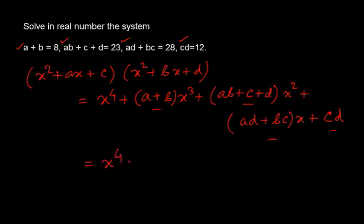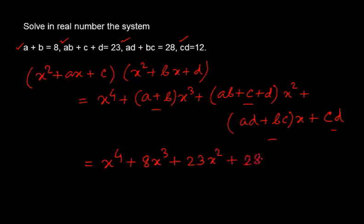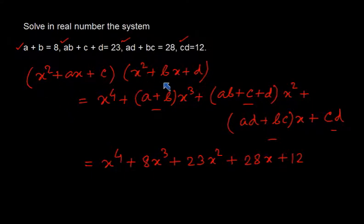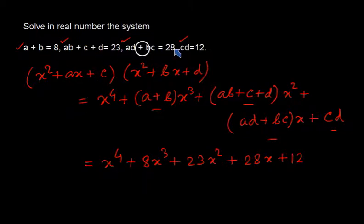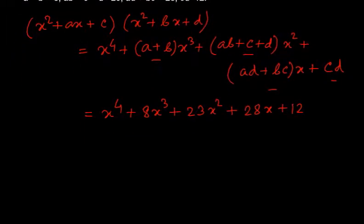So we are getting a biquadratic polynomial. By substituting the given values, that is X⁴ plus 8X³ plus 23X² plus 28X plus 12. This is the biquadratic polynomial we are getting. Now to solve for A, B, C, D, what we need to do is factorize this biquadratic polynomial into two quadratic factors of the form (X² + AX + C) and (X² + BX + D).